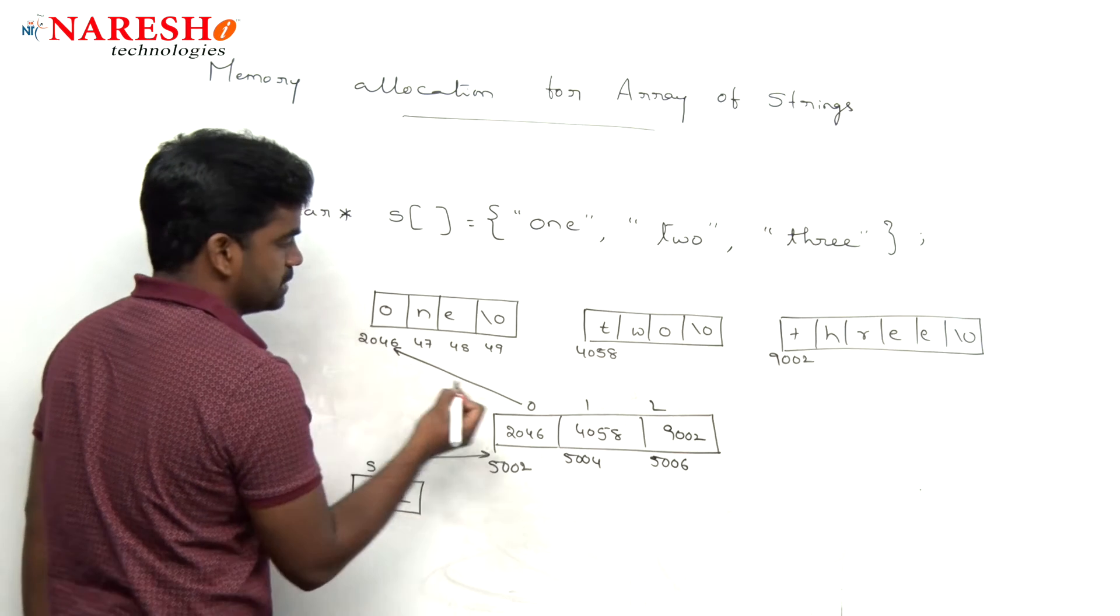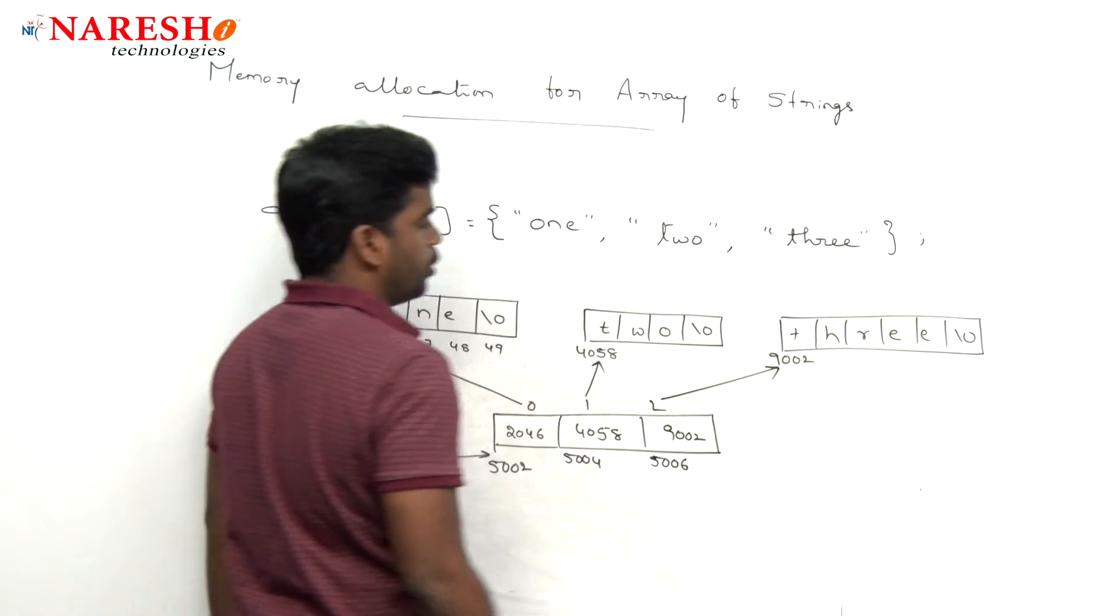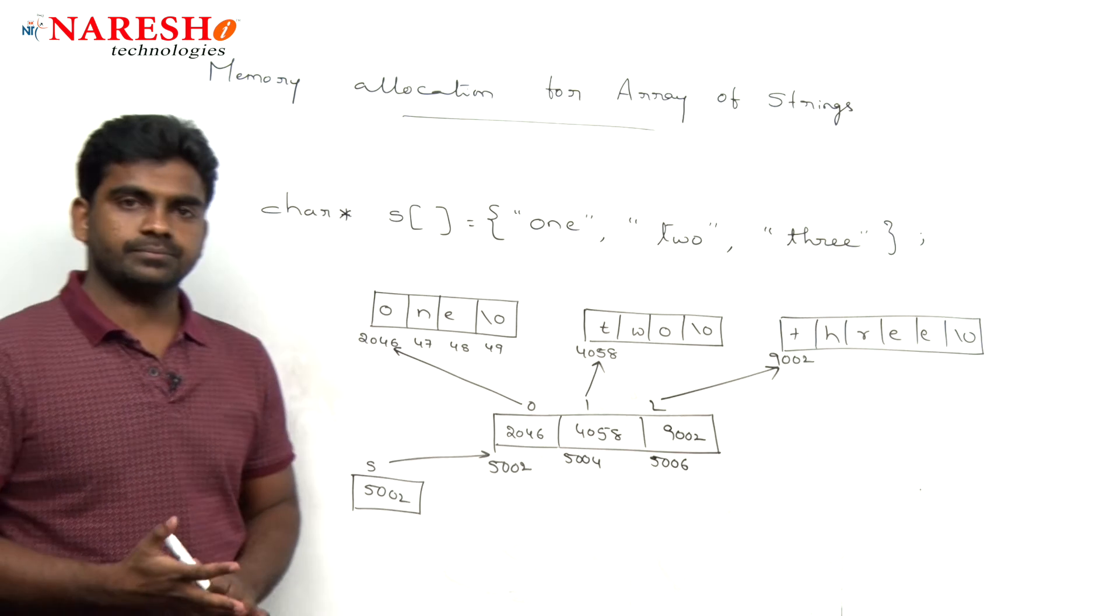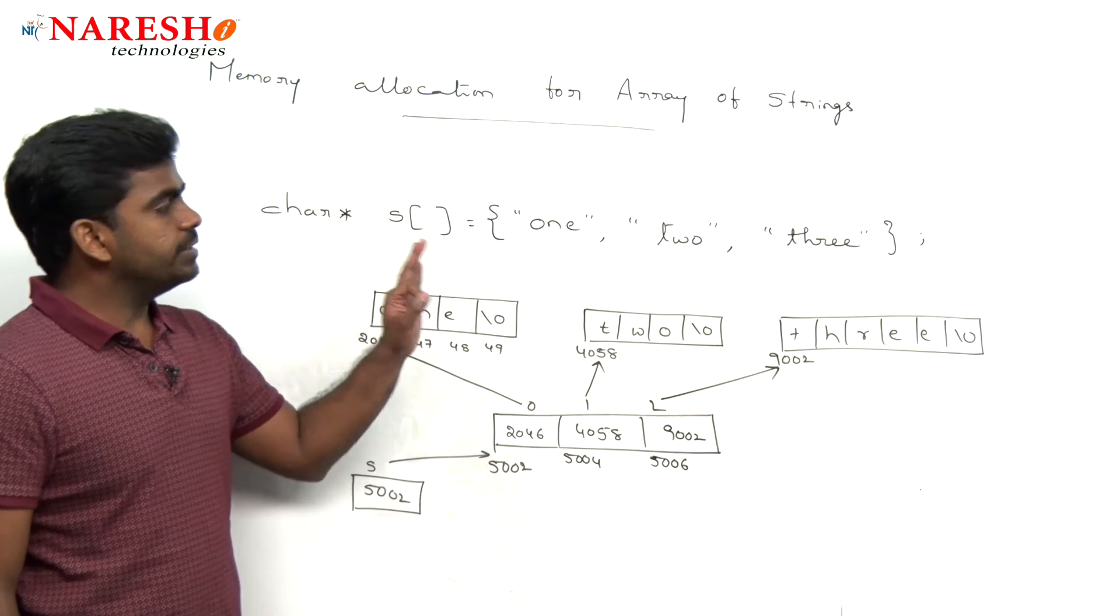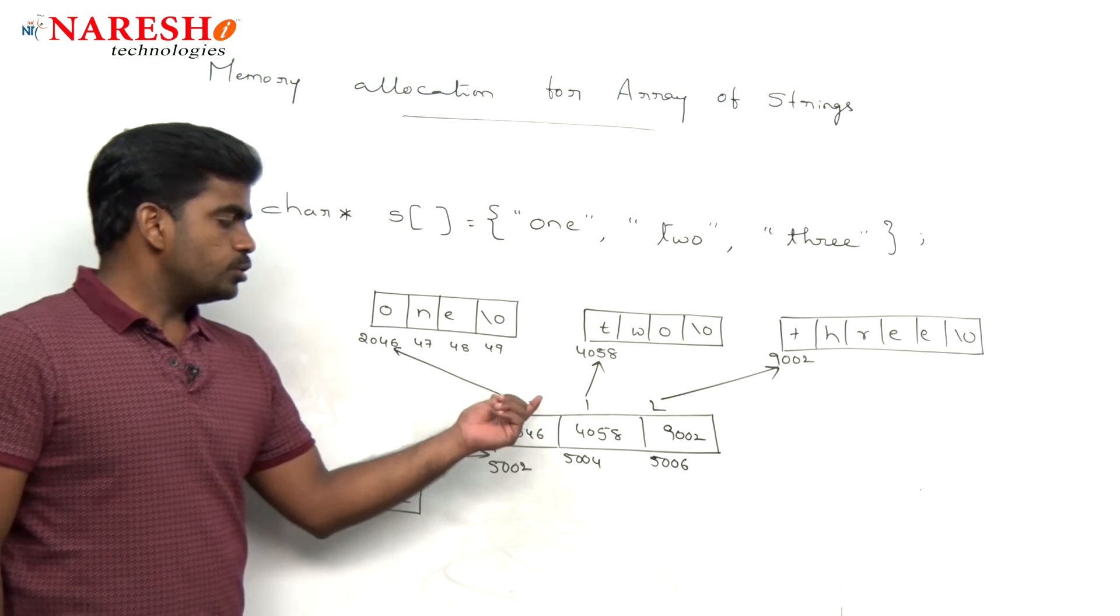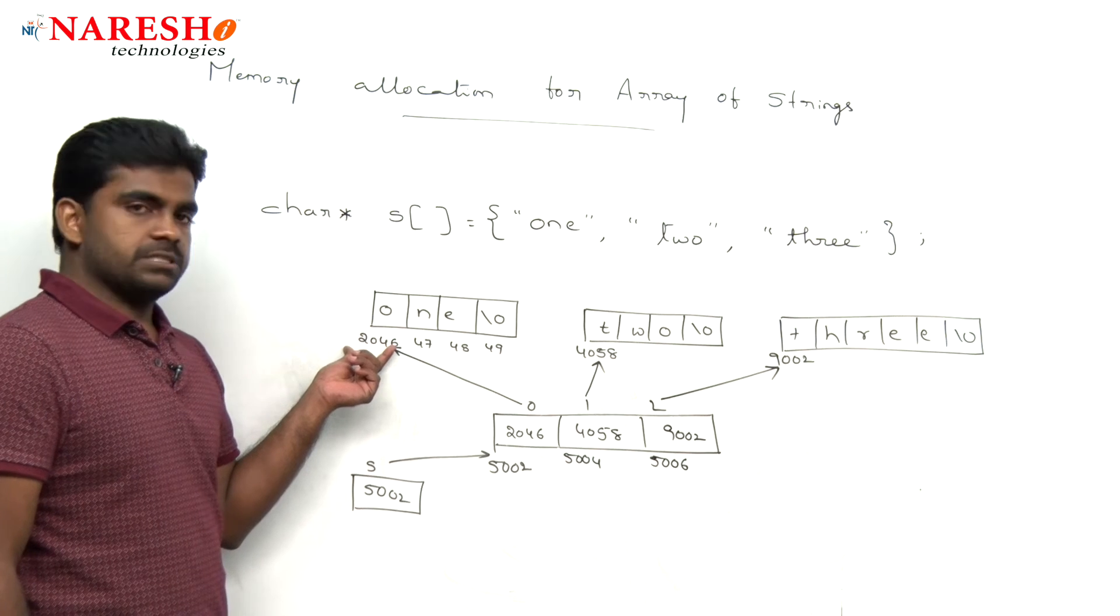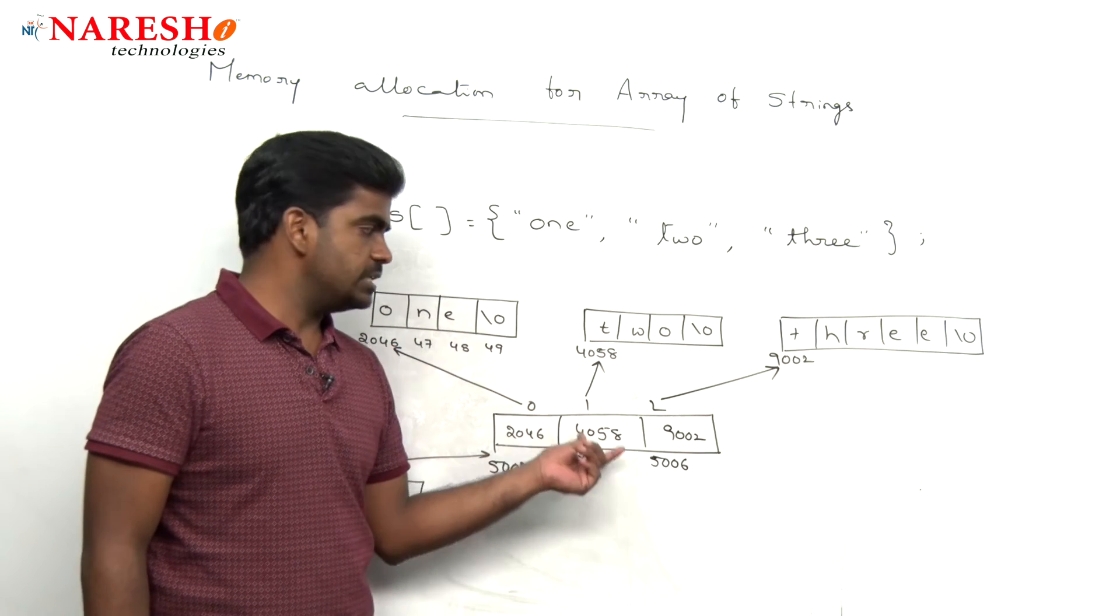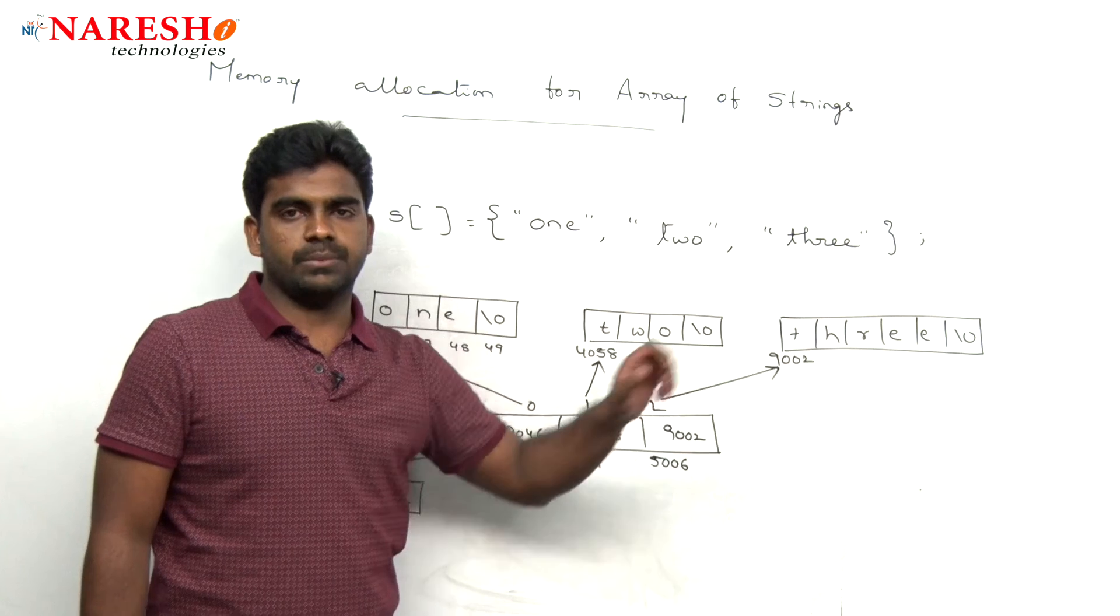It is pointing to this first string, it is pointing to the second string, it is pointing to the third string. What is the size of this array? Three elements are there. So, size is 3. In the 0th position, it is pointing to that first string. In the first location is pointing to that second string. And third one is storing the third string base address.